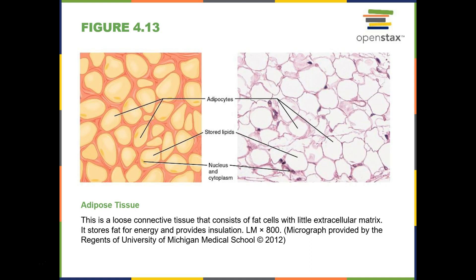Here we have adipose connective tissue. Adipose connective tissue is highly vascular. The main cell structures are fat cells — adipocytes — that can store fat. They provide protection from cold and from any shock or blows that come into the body. They can also help to maintain energy when our energy reserves are low.